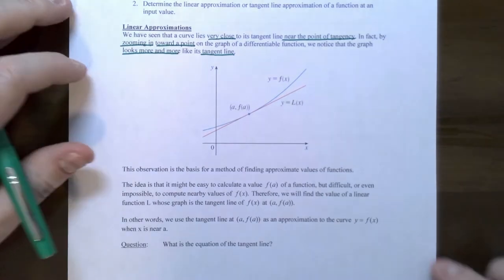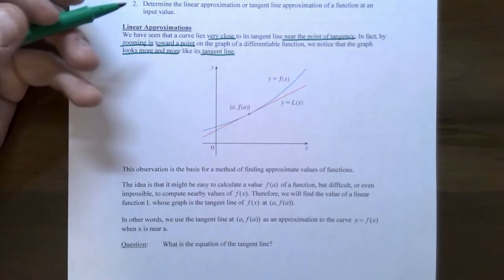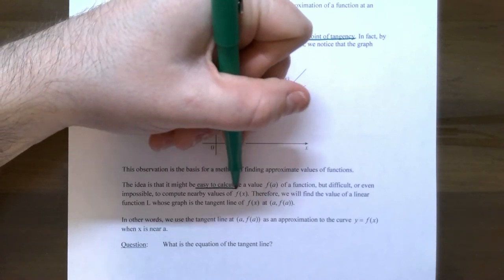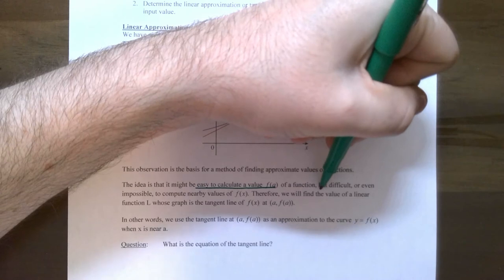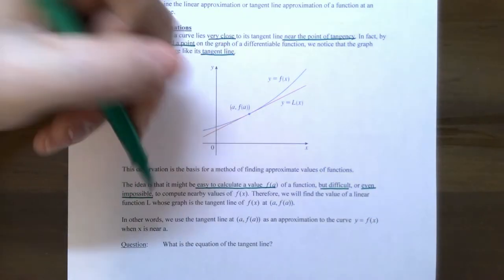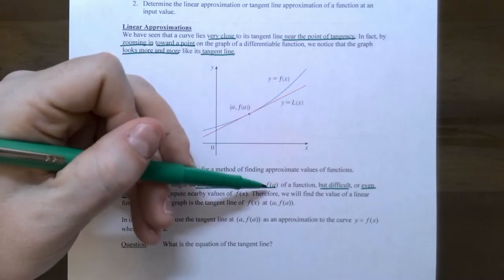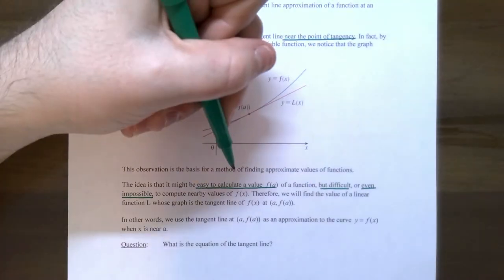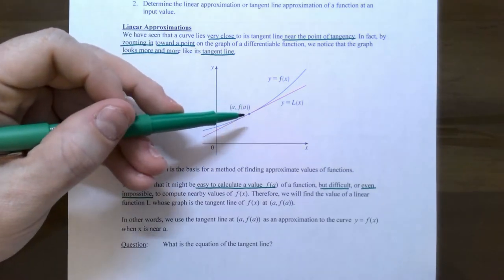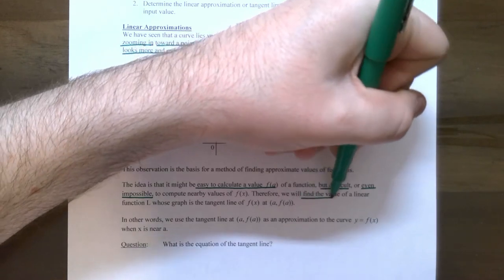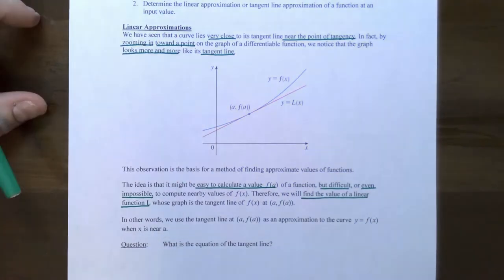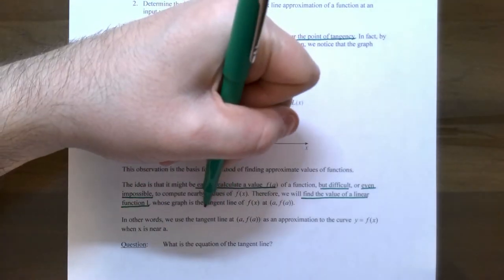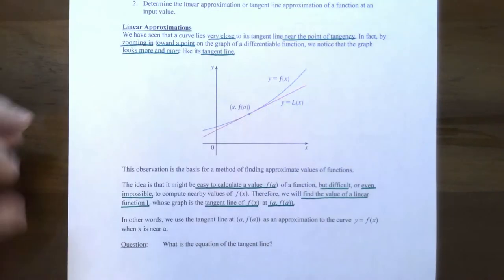The idea works like this. It may be easy to calculate a value f of a, but it might be impossible or difficult to evaluate values of x that are really close. So the idea is: what if you take the tangent line to approximate the graph? We're going to find a value of the linear function L — called L because it's a linearization — where the graph of the tangent line of f of x at x equals a can be found very easily.